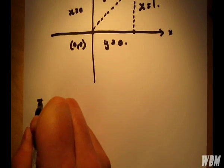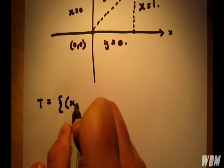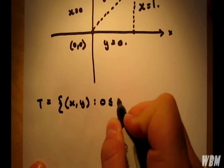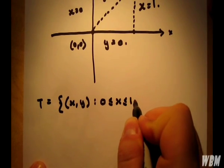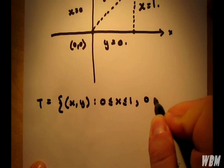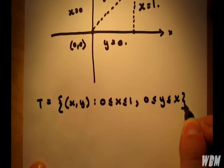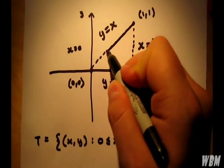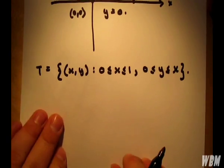So what we have is a triangle over x and y, where x is between 0 and 1 inclusive, and y is between 0 and x, also inclusive. Because it's inclusive, strictly speaking, I should close up the triangle there.